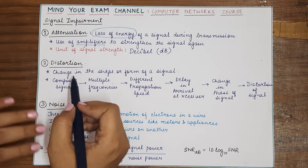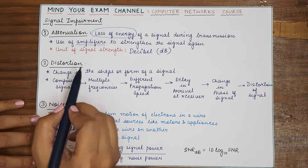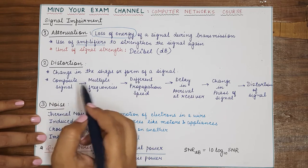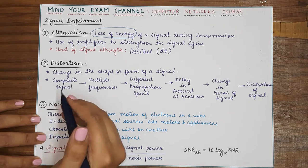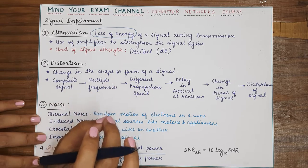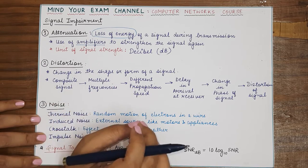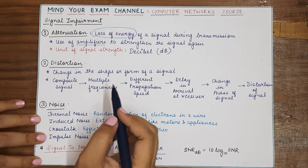Now, the second kind of signal impairment is distortion. Distortion basically means that when the signal is traveling a distance, it is changing its shape or it is losing the original form or structure that was actually present at the sender side.